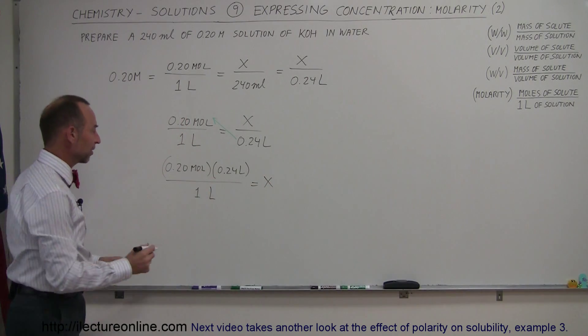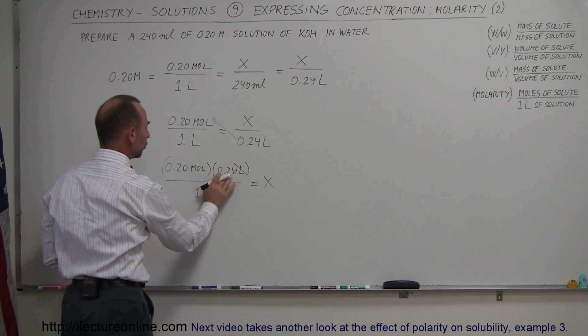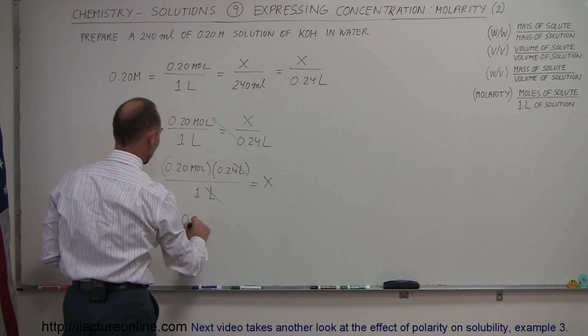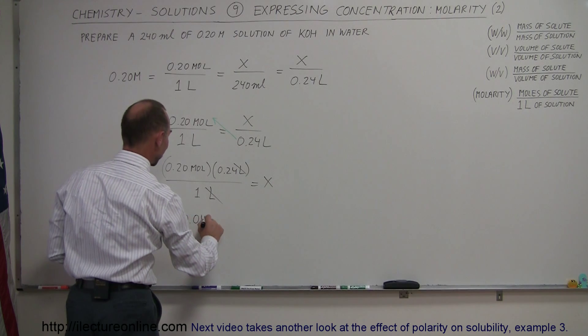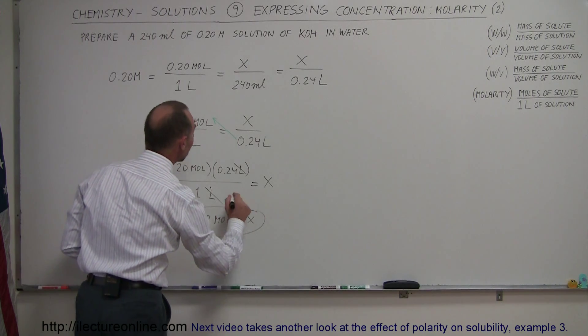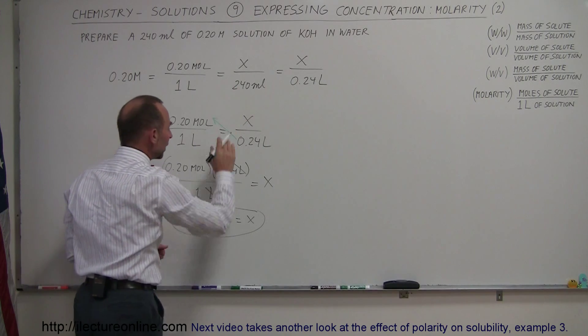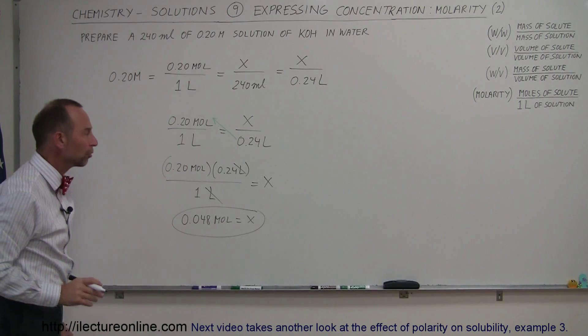So now we can go ahead and see that liters cancel out. And we're left with moles and 0.2 times 0.24, that is 0.048 moles equals X. So that means that if we're going to make a 0.2 molar solution for only 240 milliliters, we only need this many moles of the solute, this many moles of the potassium hydroxide.